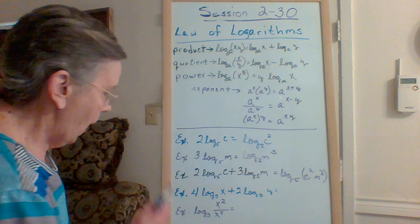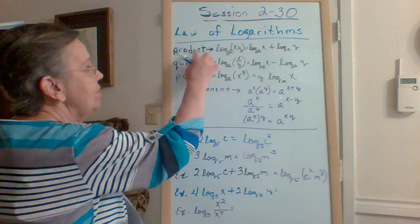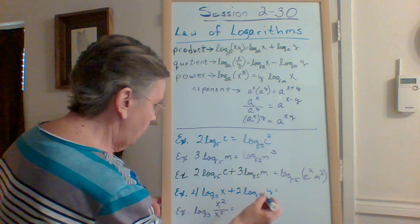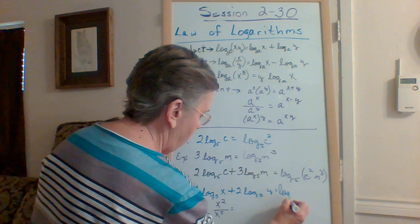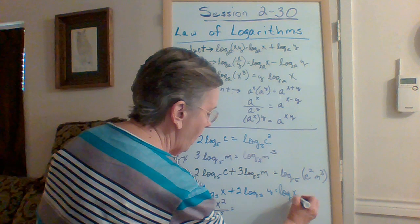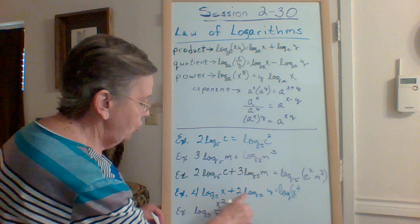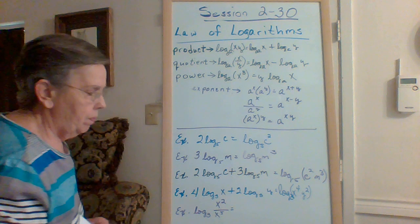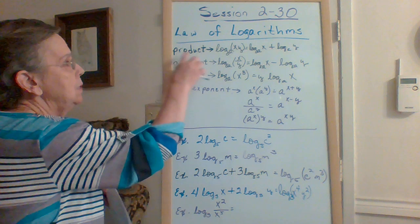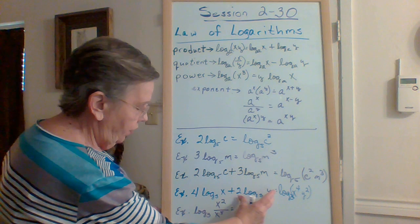Let's look at the next one. Again, that's a plus, so that means I'm going to have a product. So that's going to be the logarithm of x to the fourth times y to the second with a base of three. It's a plus, so that's the product, but I have to simplify each part first.